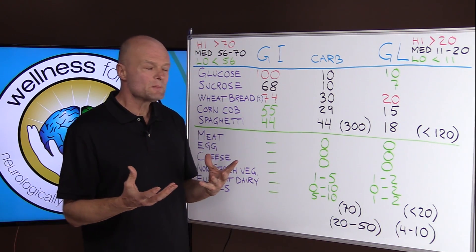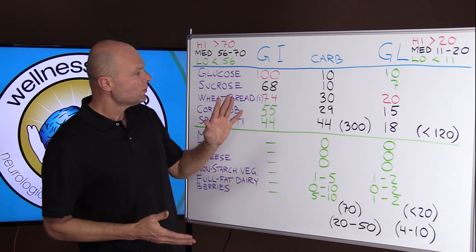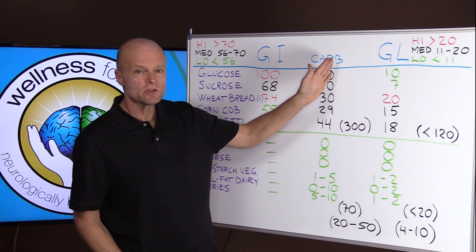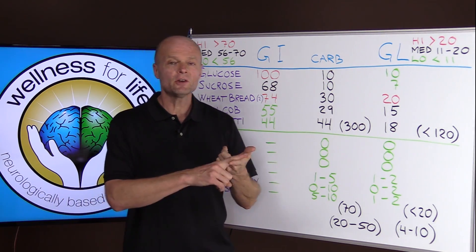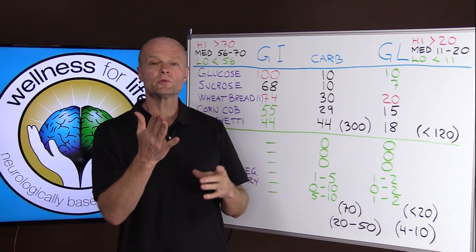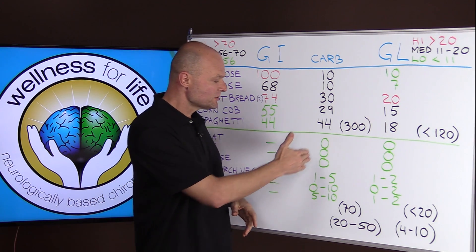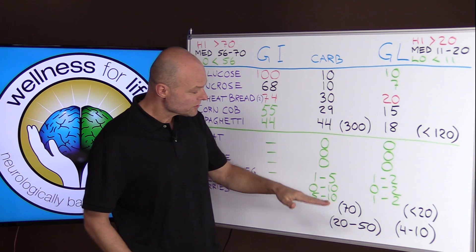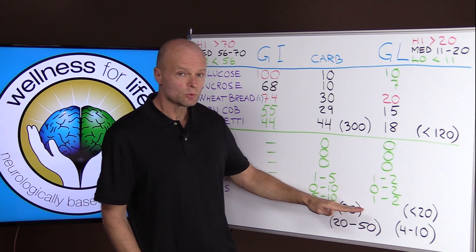So which one is better? Well, I would recommend that you just count carbs. You count net carbs, you take the total carbs, you subtract the fiber, that gives you the net carbs, and you try to keep those in a low range.